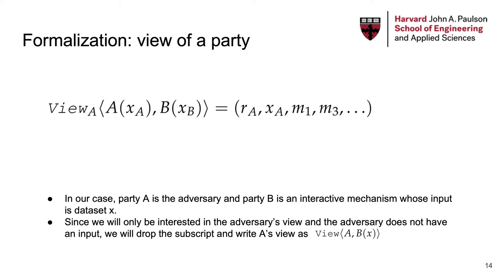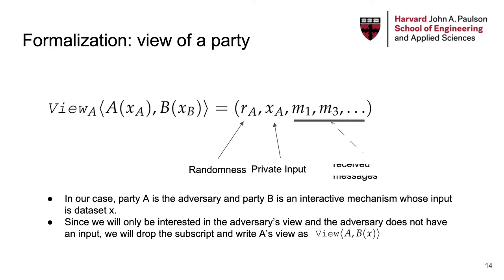We further define the view of a party in an interactive protocol, which is essentially everything the party sees, including the party's randomness, its private input, and the messages it received. In our case, A is the adversary and B is the mechanism whose input is usually a database. Since the adversary does not have an input in our case, and we will only be interested in the adversary's view, we will drop the subscript.